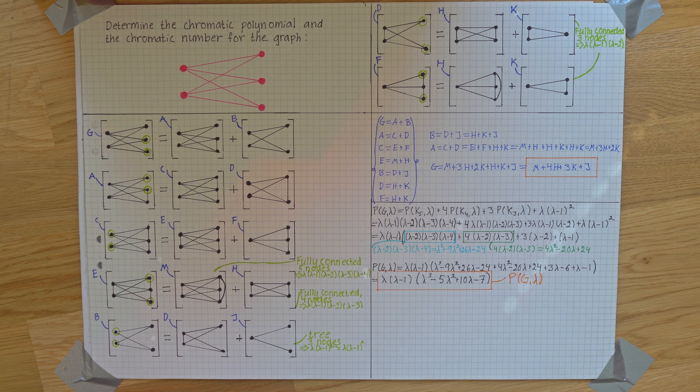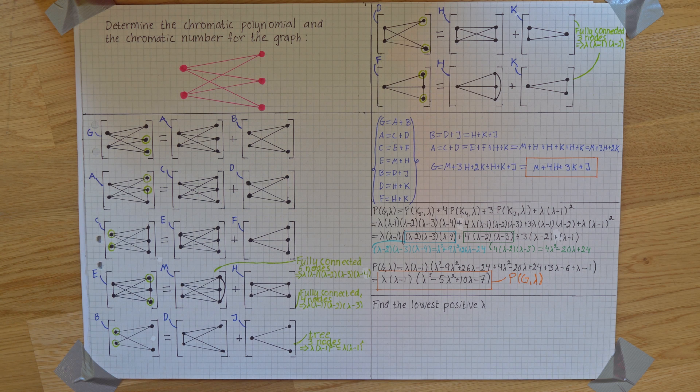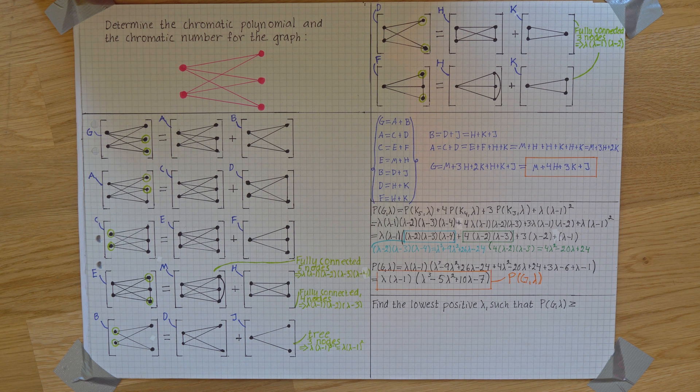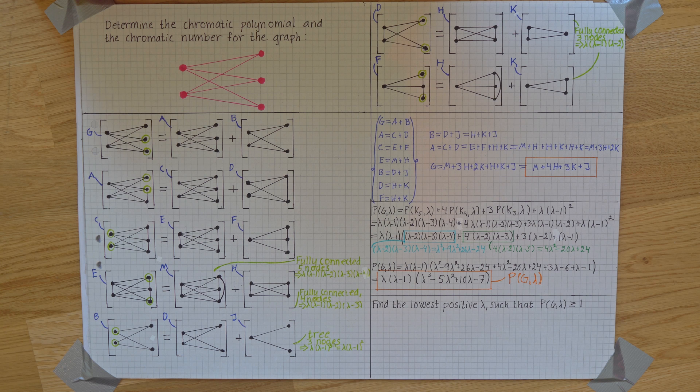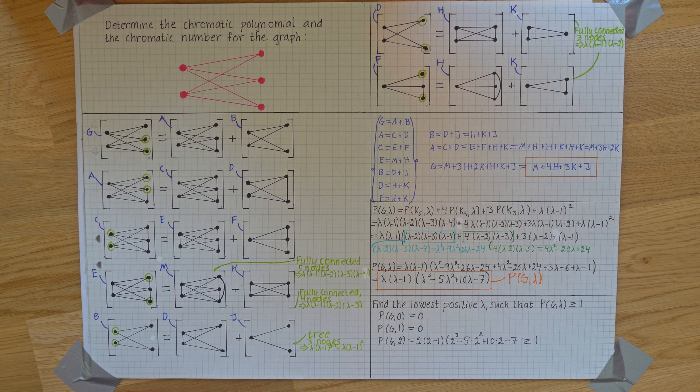To get the chromatic number we now need to find the lowest positive lambda such that it is equal to or greater than 1. Something that is not the case for 0 or 1. But plugging in 2 as lambda in the chromatic polynomial will result in 2 which is greater than 1 and that means that 2 is a chromatic number.